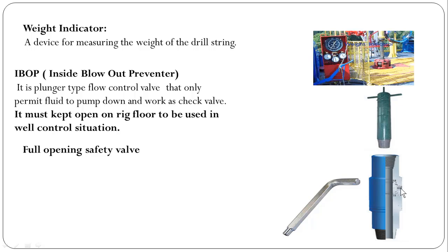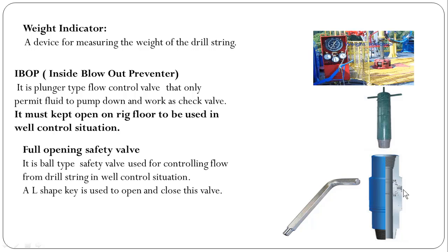Full opening safety valve. This is a picture of the full opening safety valve, whereas an L-shaped key is used to open or close this valve. It is a ball-type safety valve used for controlling flow from the string in a well control situation. An L-shaped key is used to open and close this valve, and it must be kept in the open position.